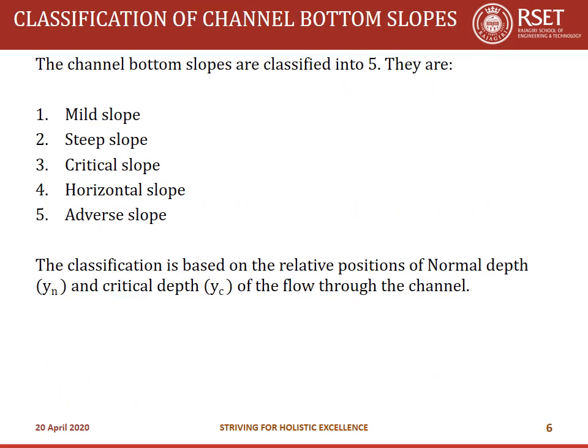Now we move to classification of channel bottom slopes. Channel bottom slopes can be classified into five types: mild slope, steep slope, critical slope, horizontal slope, and adverse slope. The classification is based on the relative positions of the normal depth yn and critical depth yc. If flow was at normal depth its depth would be yn; if at critical flow, depth would be yc. Comparing yn and yc gives the channel bottom slope.